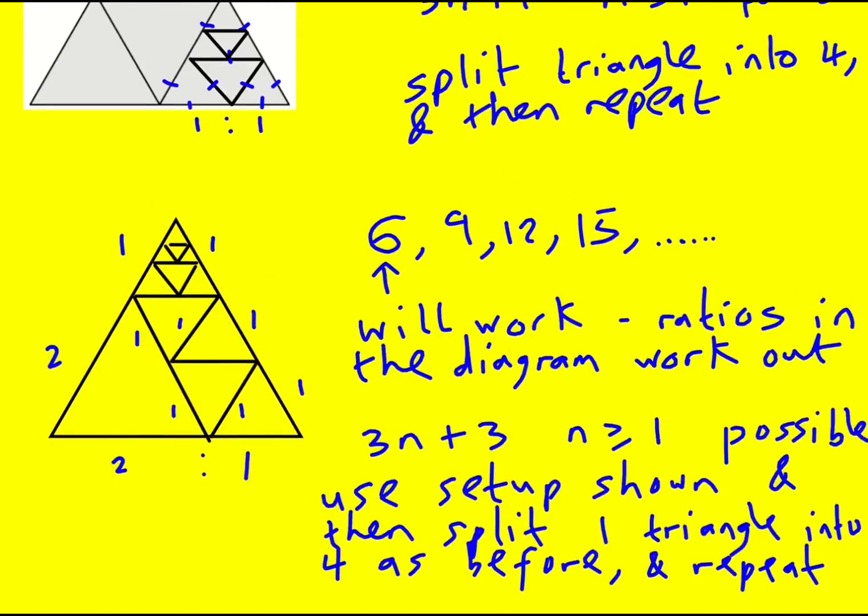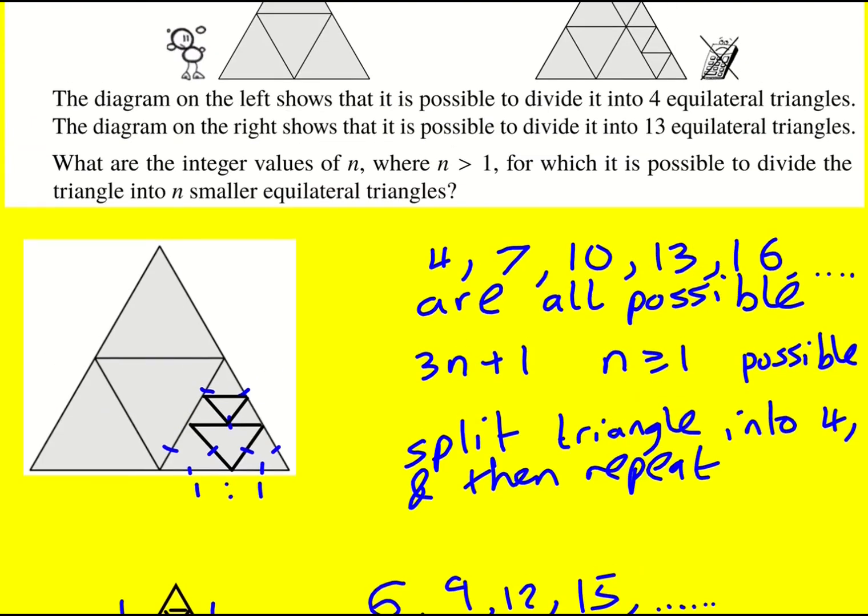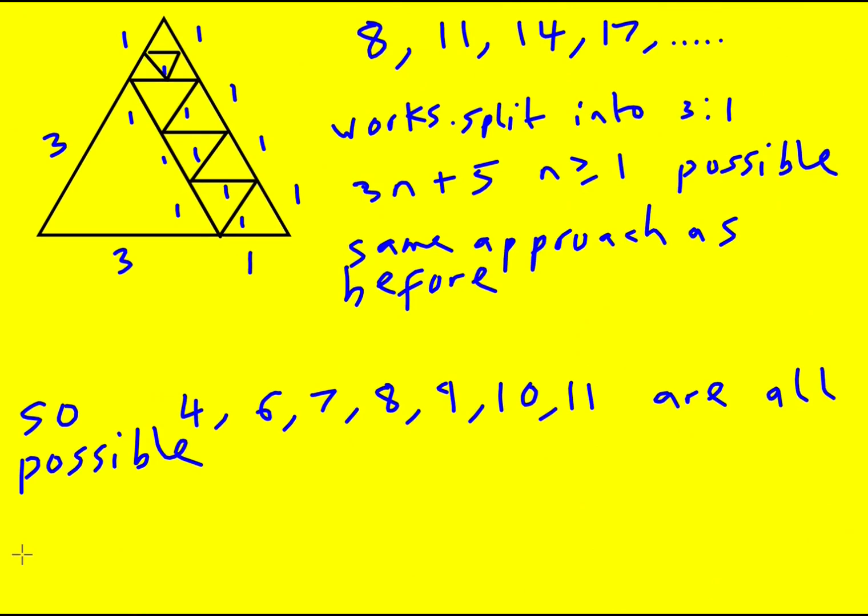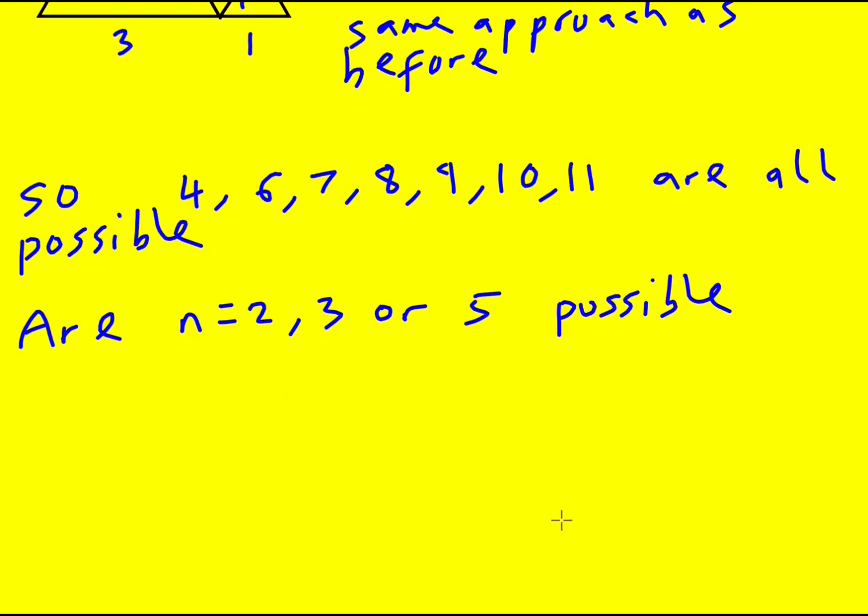The original question was asking about n greater than one. So what we're left with are two, three, or five possible. The fact that we've not found them using these constructions could well mean that they're not possible but we do need to delve into that a little bit and again that's one of the reasons why that makes this question quite hard. So we're going to look into that now.